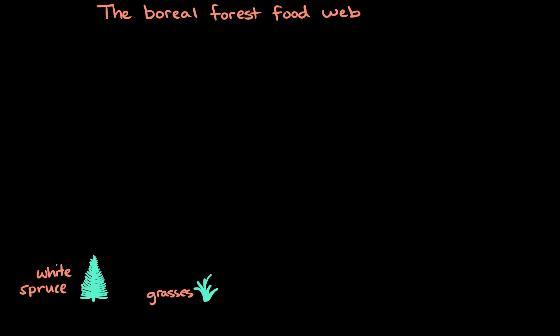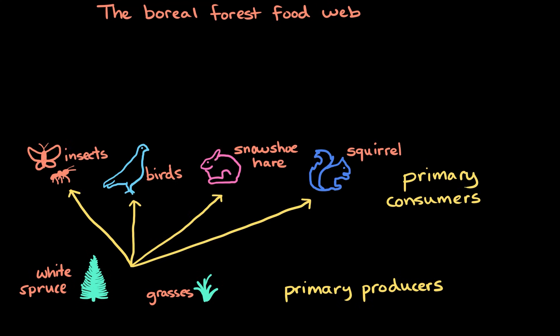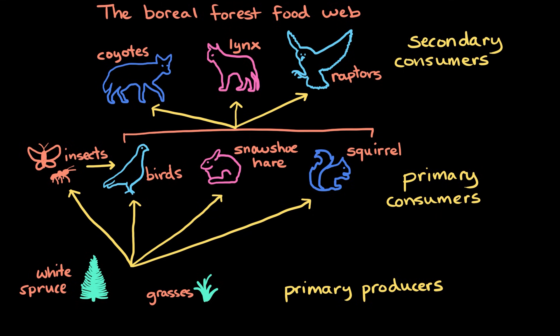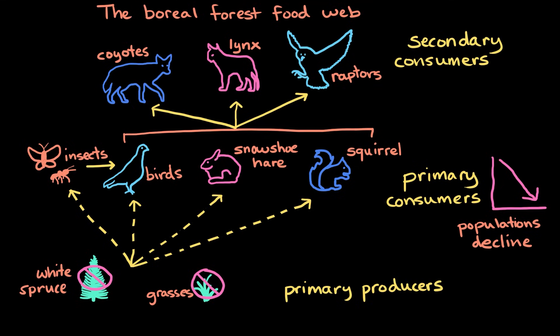So let's go back to the wind throw example in the boreal forest. In this ecosystem, the white spruce and grasses are the main primary producers. They provide food for primary consumers, which include insects, birds, snowshoe hares, and squirrels. These organisms are then eaten by secondary consumers or predators, including coyotes, lynx, and raptors like owls and hawks. If lots of white spruce trees are damaged or die, primary consumers have less food and fewer places to live, so their populations may start to decline. And if there are fewer of these organisms, the predators that rely on them also have less prey and less energy available. This means that the populations of predators will also decline. So one disruption can cause ripple effects throughout the food web, changing how energy flows through the entire ecosystem.